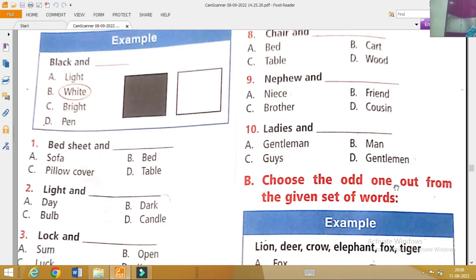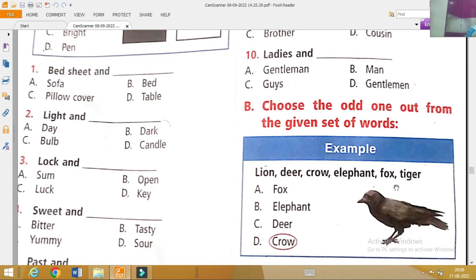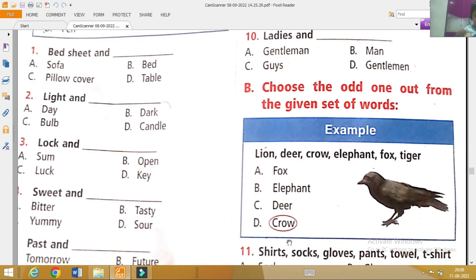Choose the odd one out from the given set of words. Lion and a crow, elephant, fox, tiger. Crow. It will be right option. It will be right option.